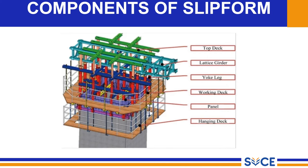Looking at the components of the slip form construction technique, the slip form system is designed with varied features. Generally, it consists of yoke legs. The yoke legs are employed to lift and sustain the weight of the entire structure so that it behaves like a single unit. The yoke legs are also used to connect with the beams, scaffolding, and working platform to serve supporting purposes. To the yoke legs, walkway brackets are connected.